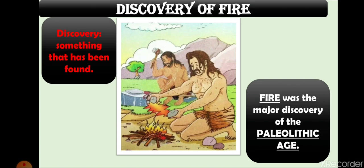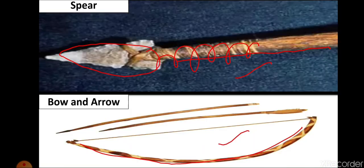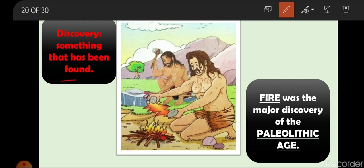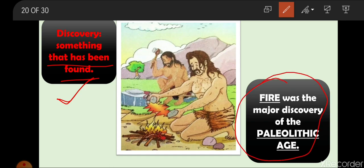Discovery of fire: during the Paleolithic Age, people discovered fire. Discovery means when something new is found. It is believed that fire was discovered while rubbing two pieces of stone together — a spark came out — or by rubbing wood together. They might have accidentally discovered fire and learned how to light it. Fire was the major discovery of the Paleolithic Age.